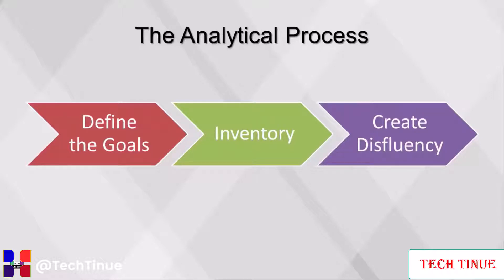Every analysis should begin with an effort to better understand the data before any analytical techniques are used. Simply observe the data files and write down a list of observations, questions, and any other ideas you have. This process, called creating disfluency, enhances the data dictionary and helps the analyst internalize elements of the data. Cognitive disfluency is the principle that enables students who take lecture notes by writing to retain more material than students who type notes, even though those who type can take notes more efficiently. Sometimes the more work we have to do to process information, the better we can understand it.